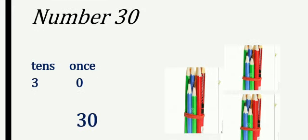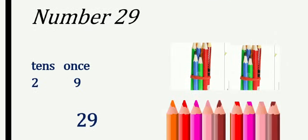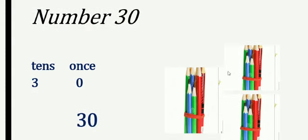And the next number is thirty — thirty is our last number. I have three bundles now. Previously we had two bundles with loose colors, but now we have three bundles: one, two and three — three bundles. So we write three. And loose colors? I have no loose colors, so we write zero. Three, zero — thirty.